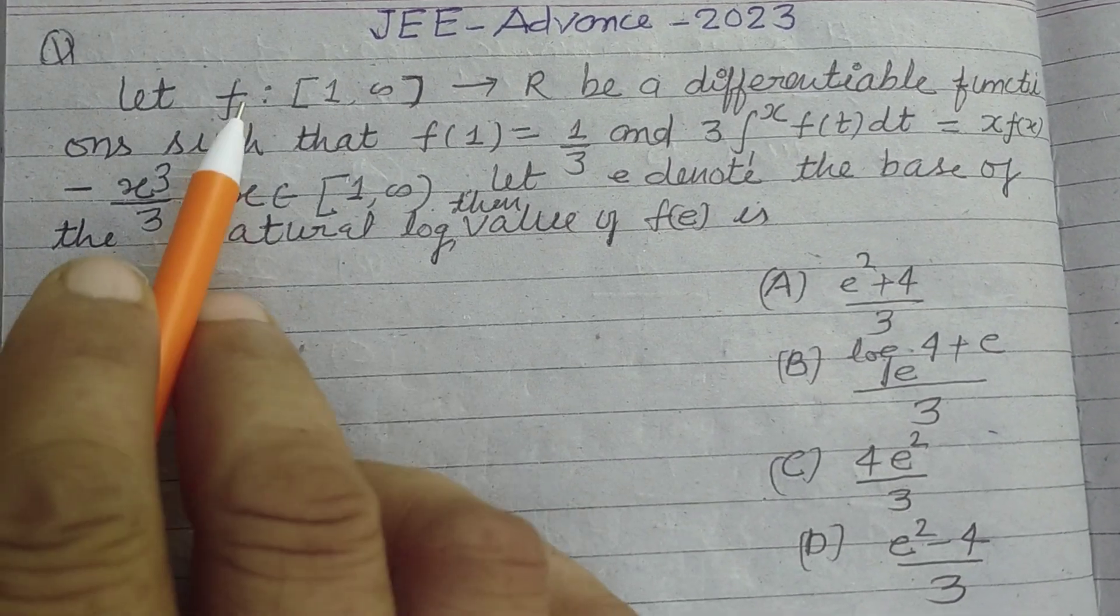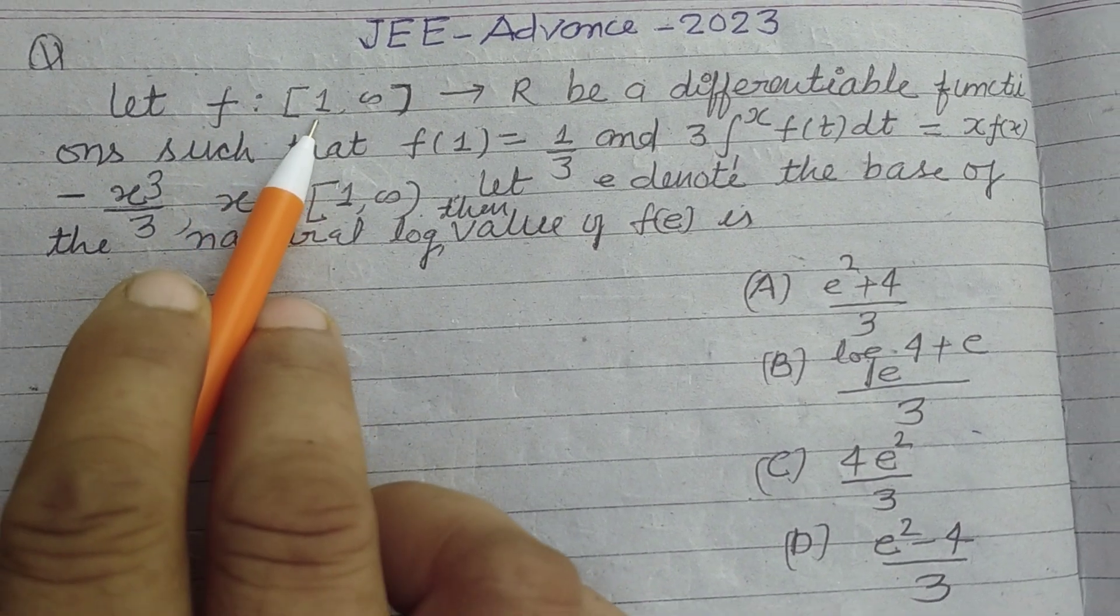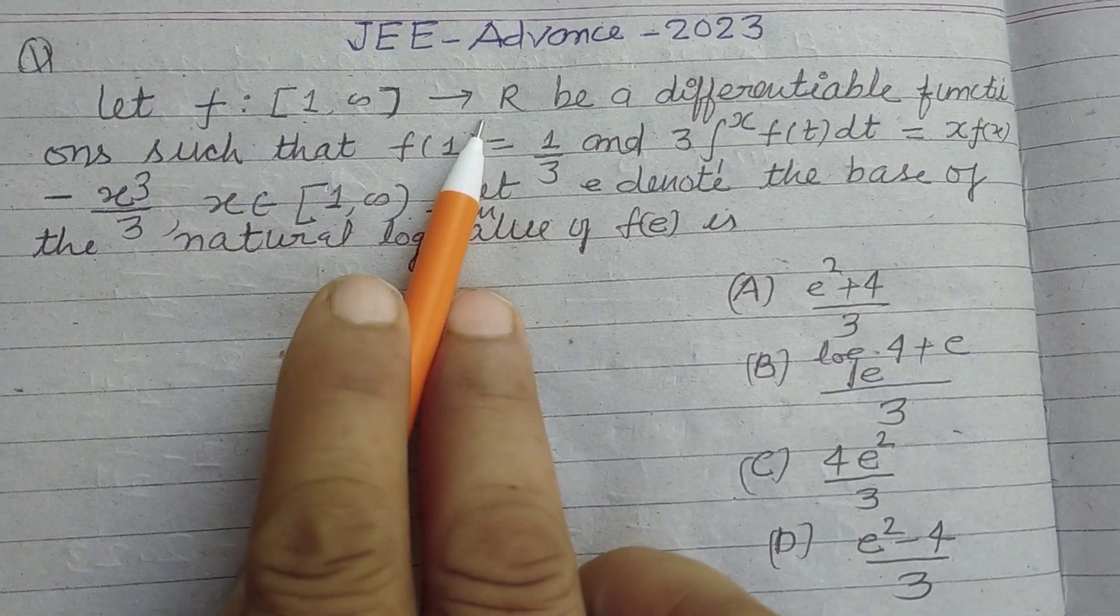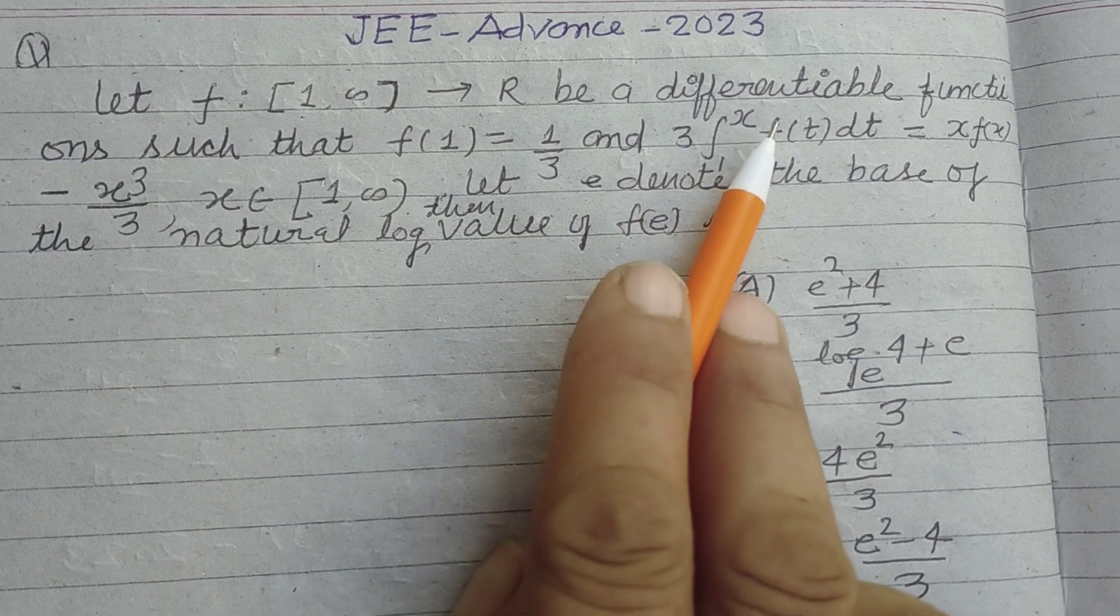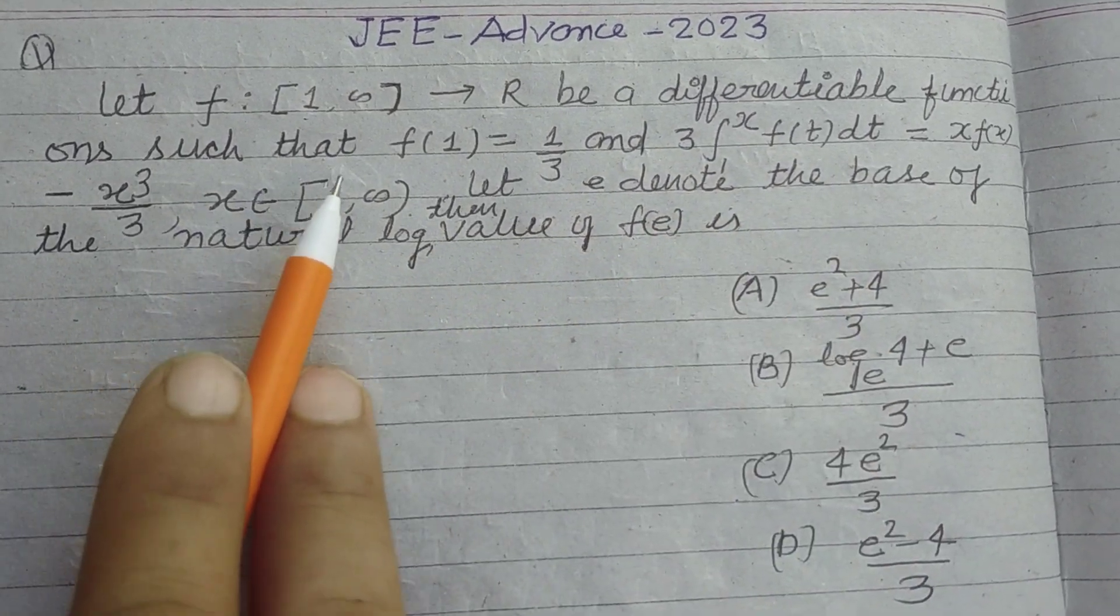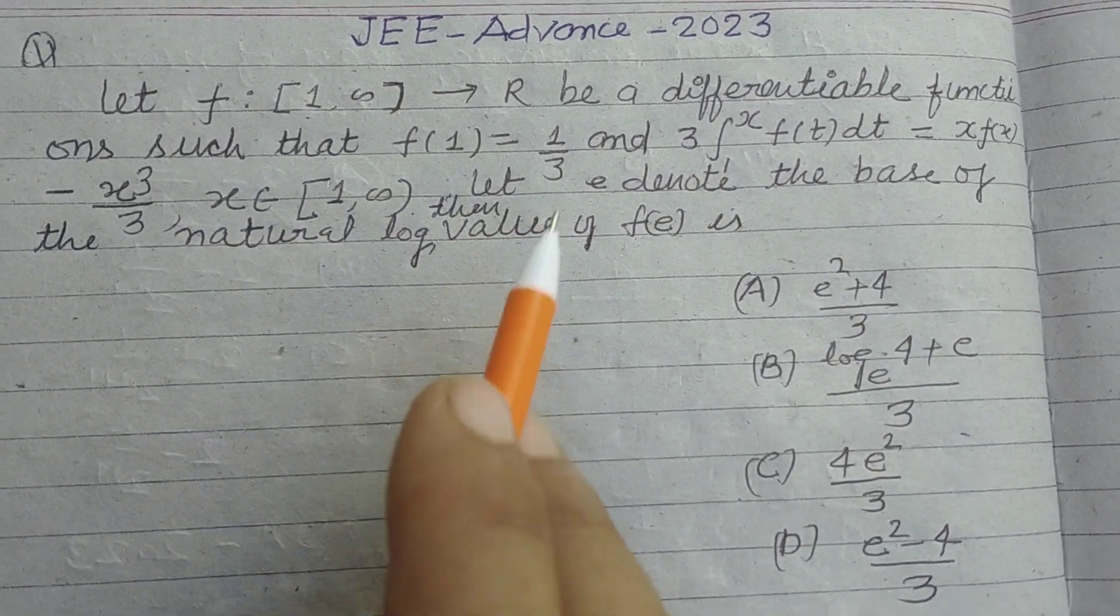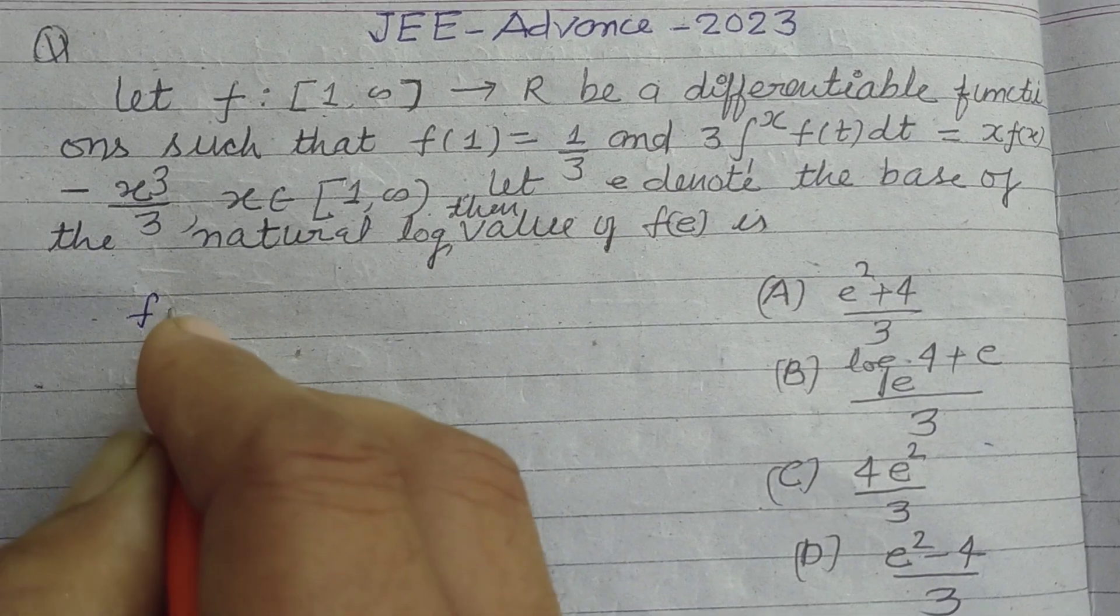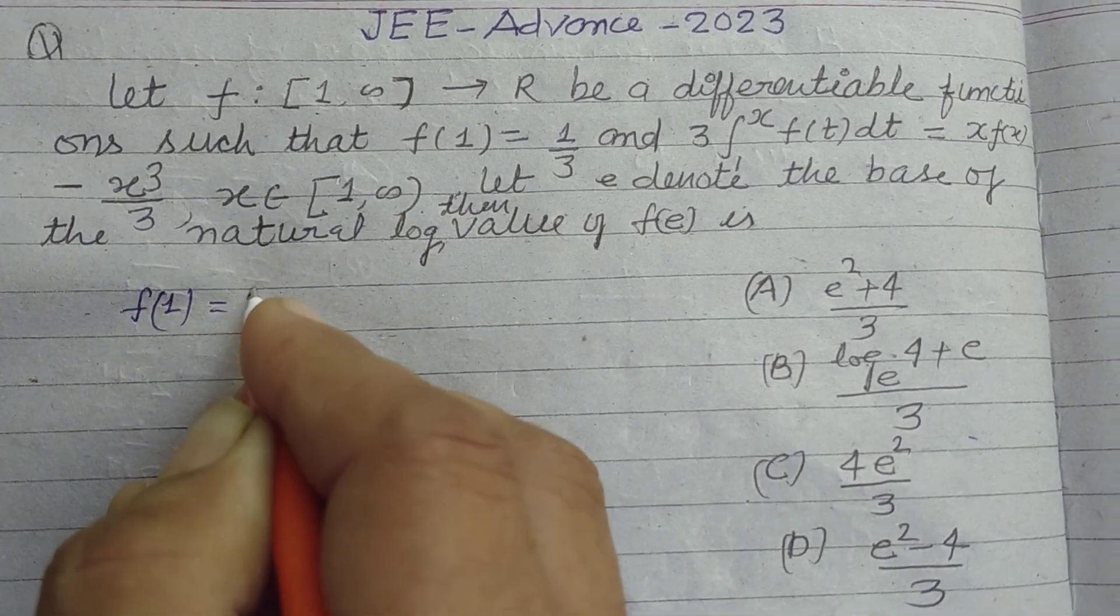The question is: let f from [1,∞) → R be a differentiable function such that f(1) = 1/3. Here given information is f(1) is given as 1/3.